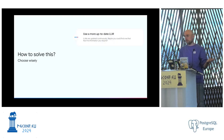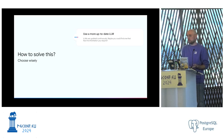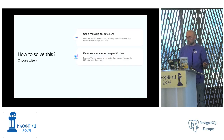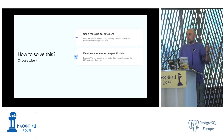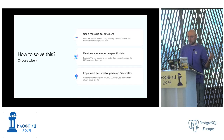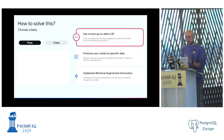There are three ways to solve this. First, use a more up-to-date LLM. Second, fine-tune a model with more up-to-date or specific data. Third, implement Retrieval Augmented Generation. Let's look at the pros and cons of each solution.